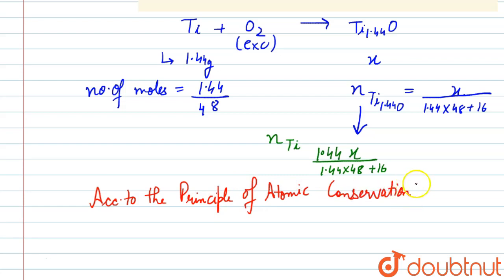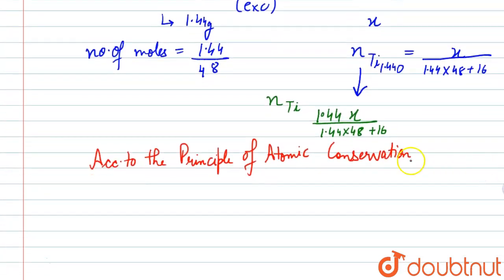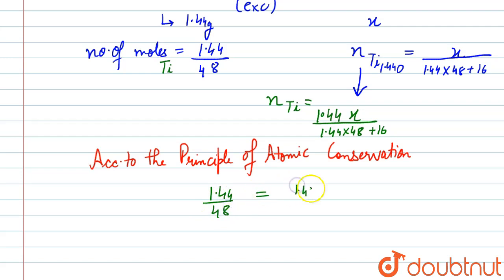According to the principle of atomic conservation, the number of moles of an element on the right-hand side of the reaction equals the number of moles on the left-hand side. So the moles of titanium on the left — which is 1.44 divided by 48 — equals the moles on the right: 1.44x divided by (1.44 × 48 + 16).